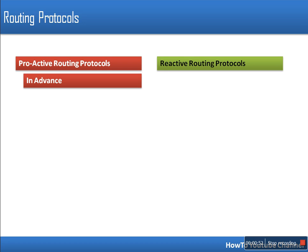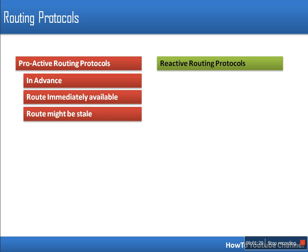Proactive routing protocols start working in advance, so the route for every node is immediately available. As soon as a node attaches itself to a network it starts accumulating information about every route, so whenever a node wants to send data that route is already available. The problem is that accumulated routes may become stale — that is, not correct — and a huge network capacity is used by exchanging route information.